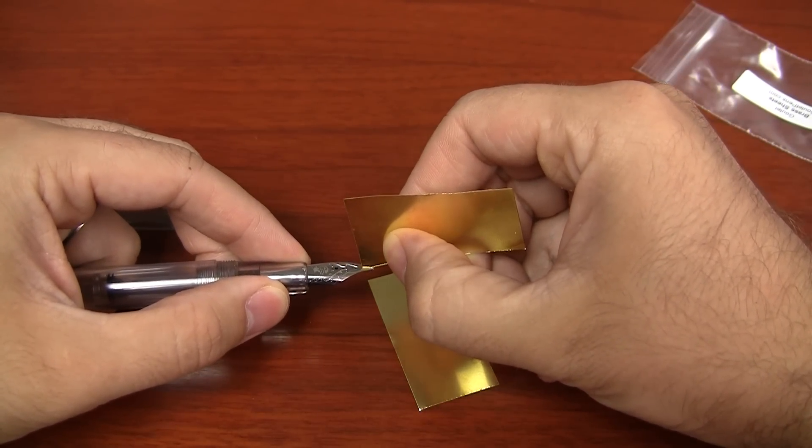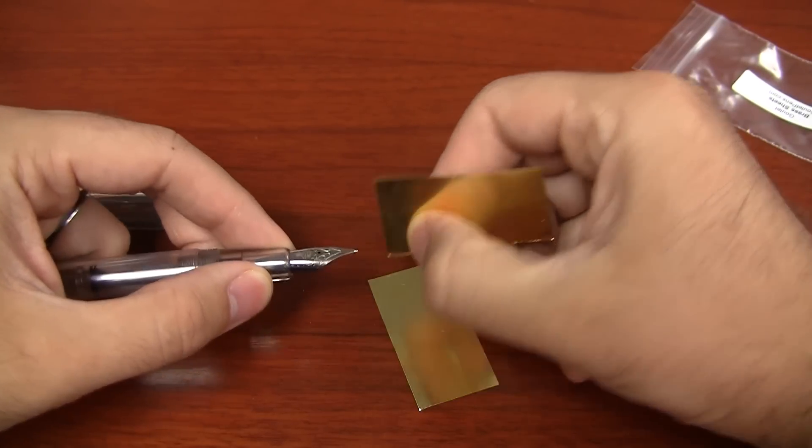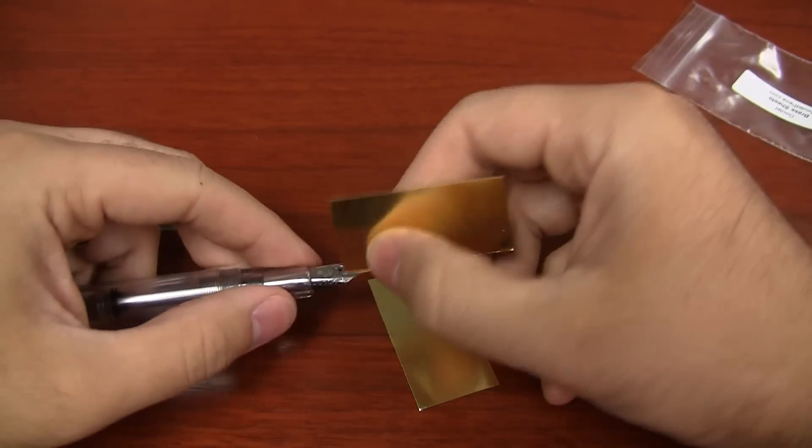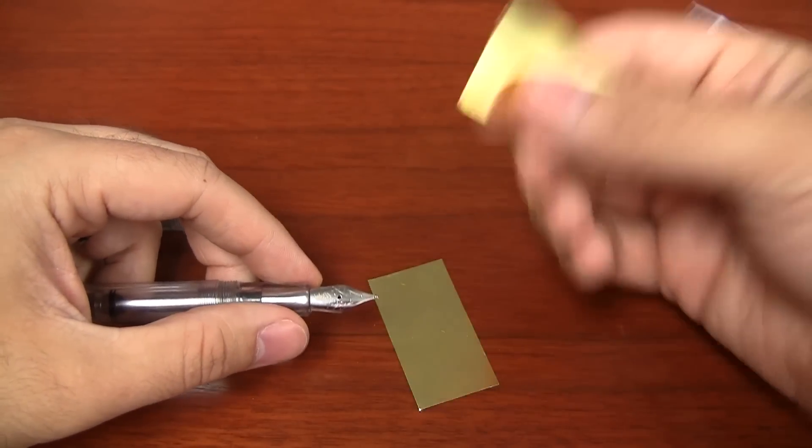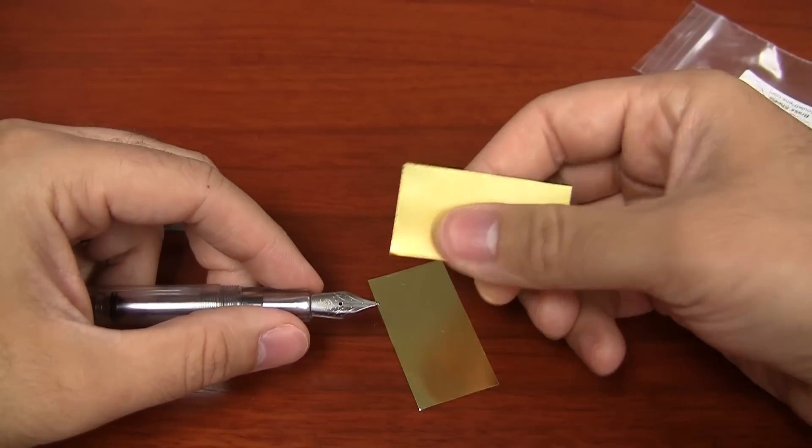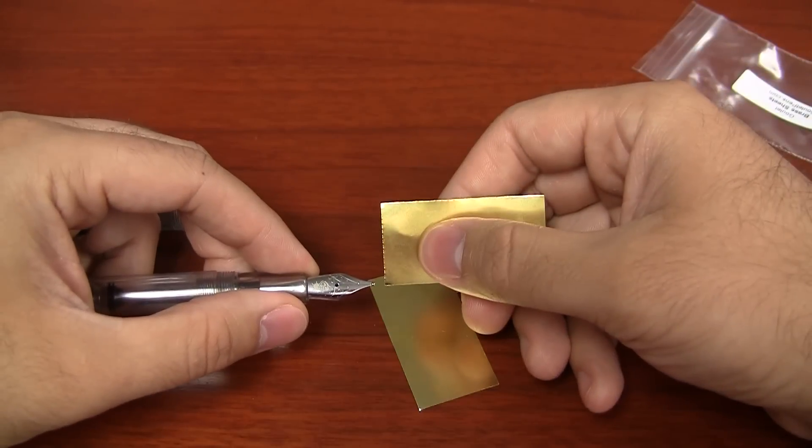You just want to do it a couple of times until you feel that you've gotten whatever could be in there. Now the brass will scratch, it could deform, it could bend. That's okay—this brass is soft for a reason so that it will give before your nib will. But that's essentially how it's done.